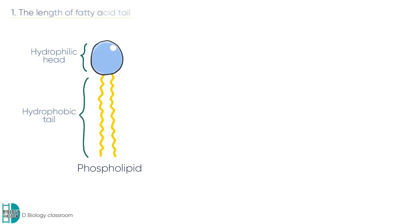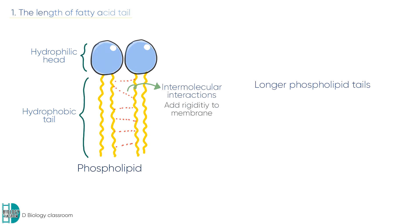The fatty acid tails of phospholipids interact with each other very often. These intermolecular interactions between the phospholipid tails add rigidity to the membrane. The longer the phospholipid tail, the more interactions there are. This causes the membrane to be less fluid.